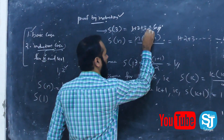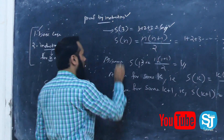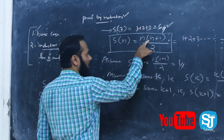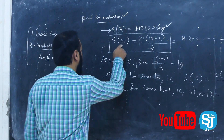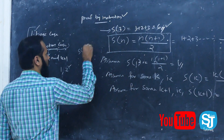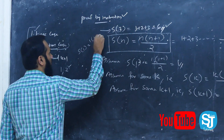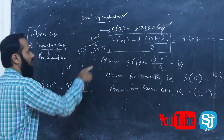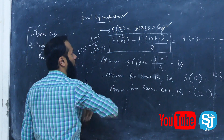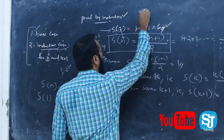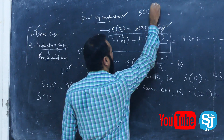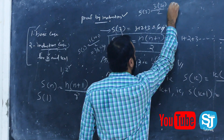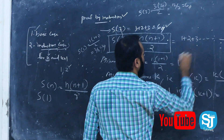S of 3 equals 1 plus 2 plus 3 equals 6. The general formula is S of n equals n(n+1)/2. For S of 1: 1 into 1 plus 1 by 2 equals 2 by 2 equals 1. For S of 3: 3 into 3 plus 1 equals 4, divided by 2 equals 12 divided by 2, that is 6.